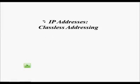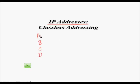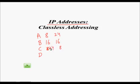In this lecture we are going to learn about classless IP addressing. Last time we learned about classful IP addressing, where addresses could be categorized into Class A, B, C, and D. Class A had 8 bits for the network ID and 24 bits for the host ID, Class B had 16 bits for each, and Class C had 24 bits for the network ID and just 8 bits for the host ID.